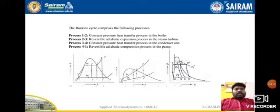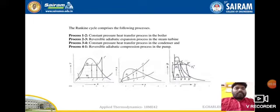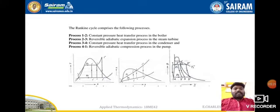Now we look at the T-S diagram, H-S diagram, and P-V diagrams. In the T-S diagram, the 1 to 2 process shows heat addition. State 2-dash indicates wet steam, state 2 indicates dry saturated steam, and state 2-double-dash indicates superheated steam. So 1 to 2-dash, 1 to 2, or 1 to 2-double-dash all indicate the heat addition process in the boiler.